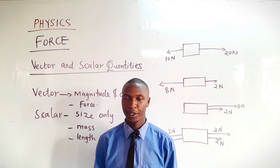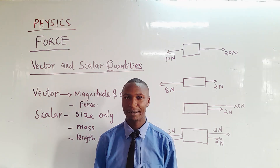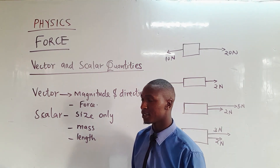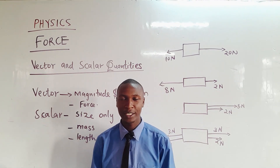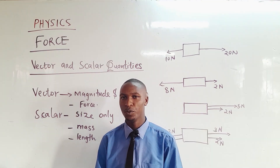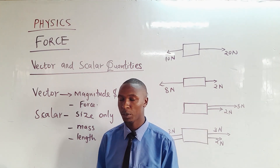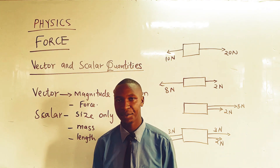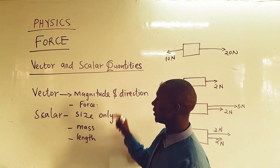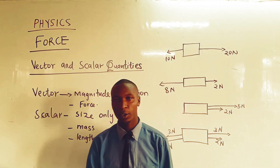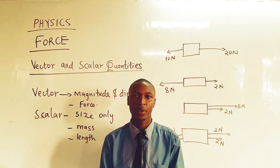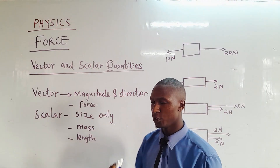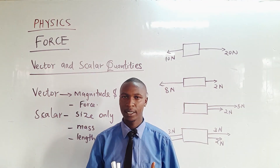In this video we are going to talk about force and discuss scalar and vector quantities. A vector quantity is a quantity that has both magnitude and direction. Magnitude here means size, so if you have a quantity that has both size and direction, that is a vector quantity.